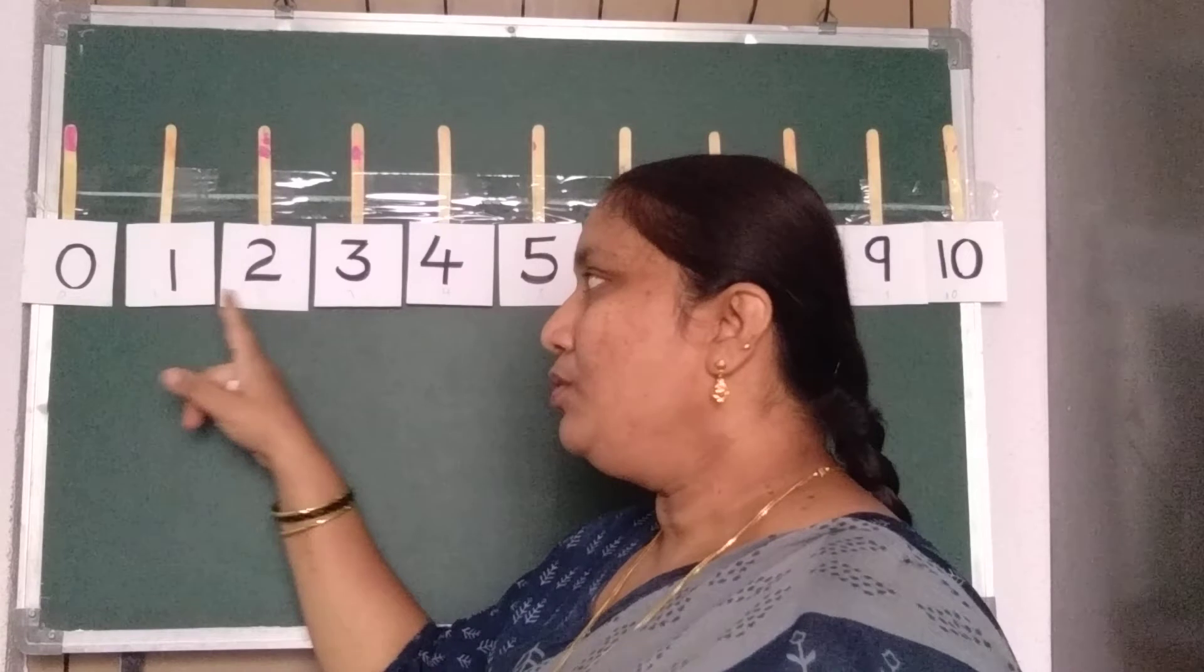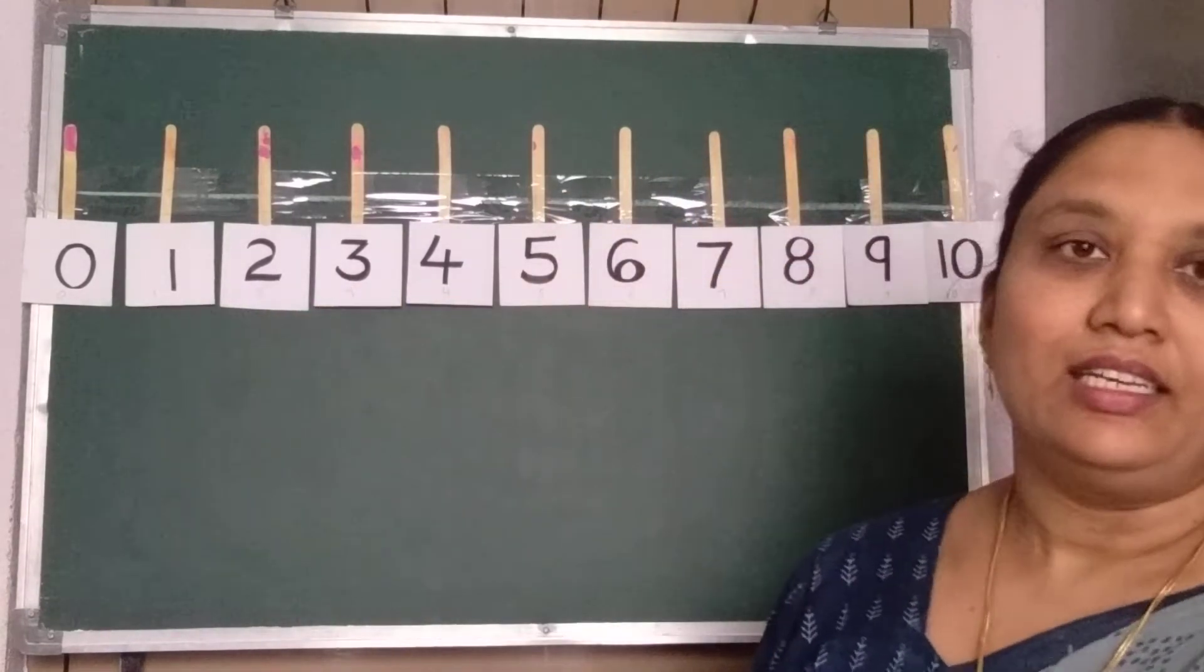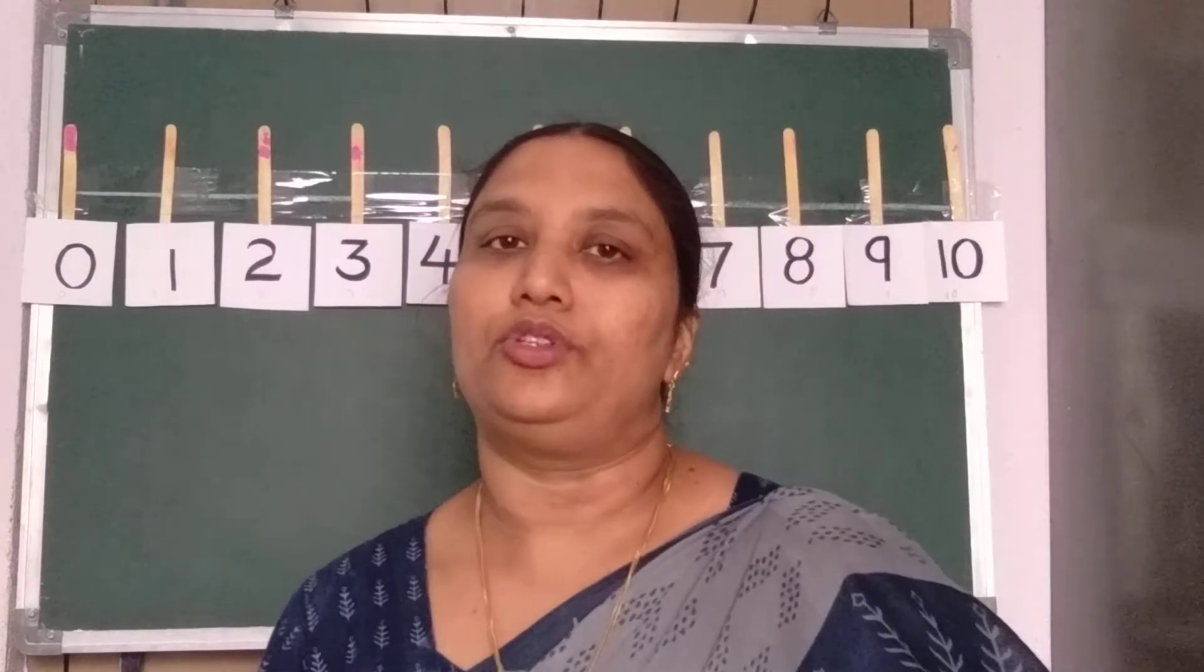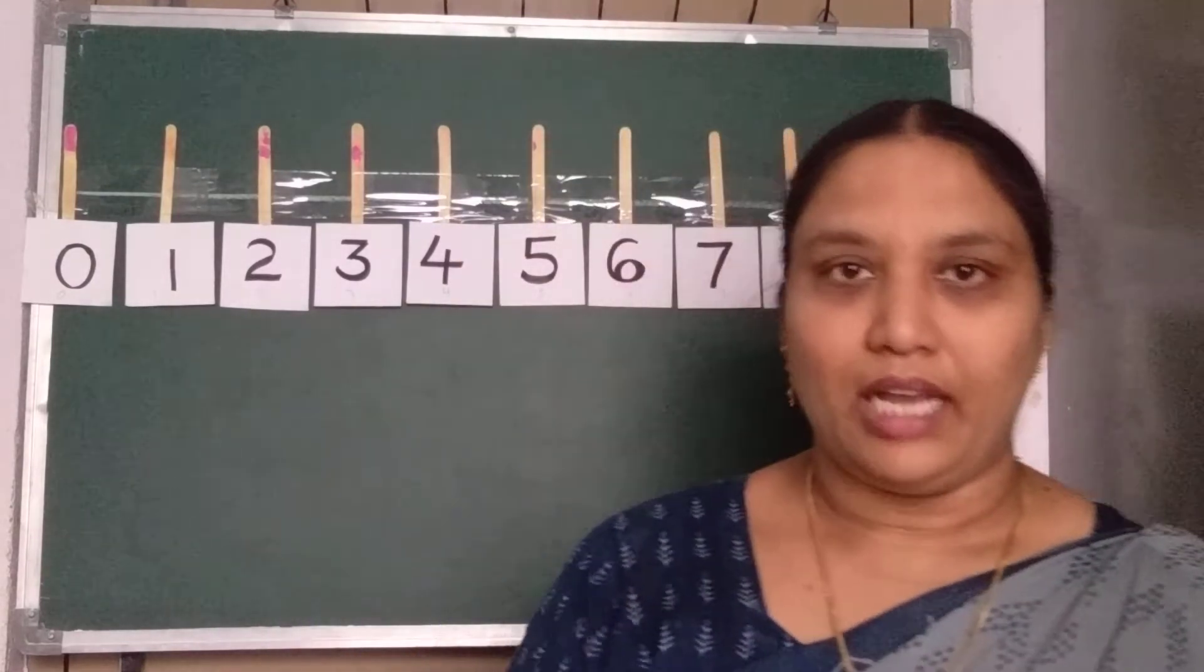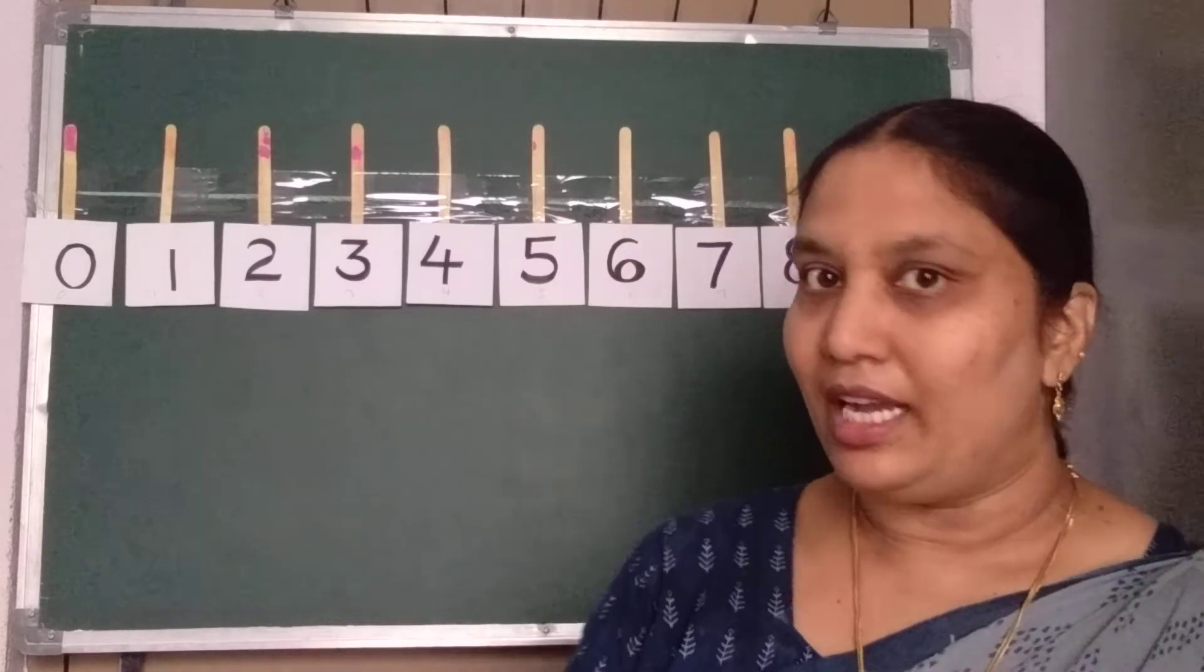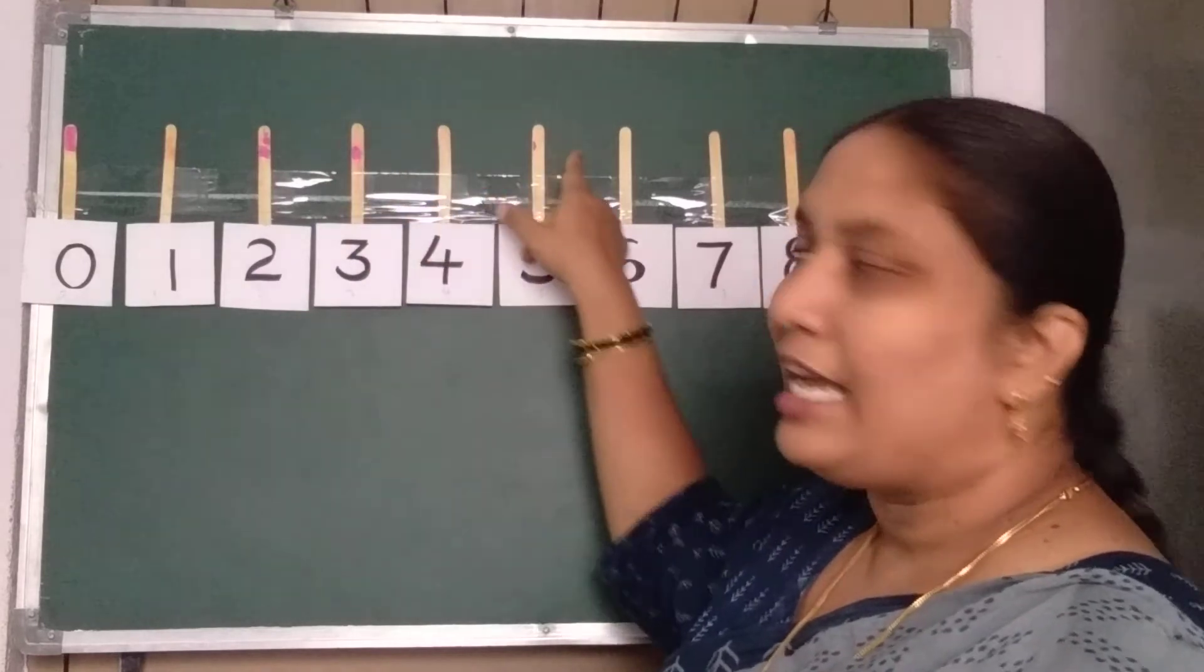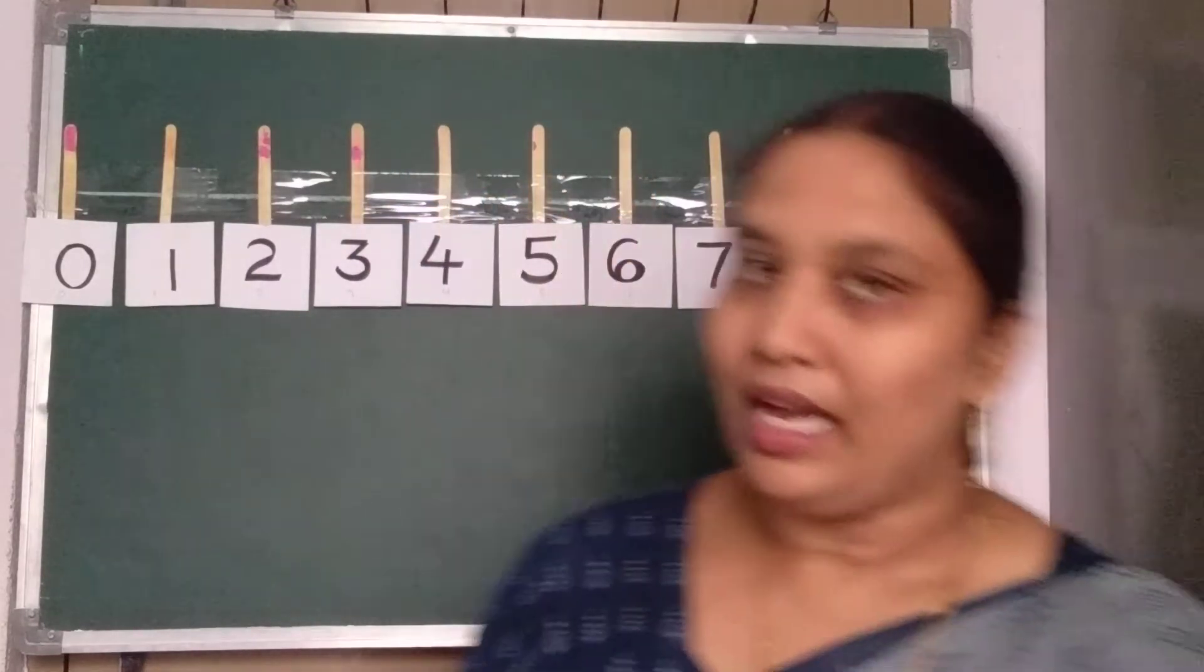And between numbers also easy for you. In between 0 and 2, 1. In between 2 and 4, 3. Like this. So you should know how to draw a number line. Today I'll teach you how to draw a number line. While drawing a number line the gap should be equal. The gap should be equal.